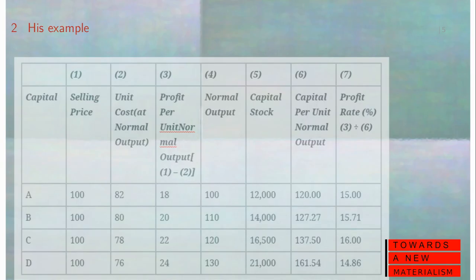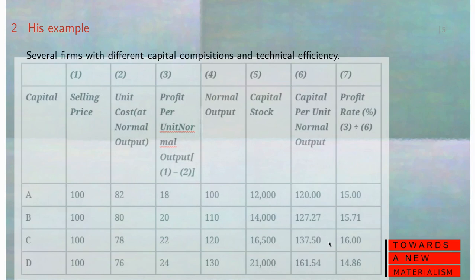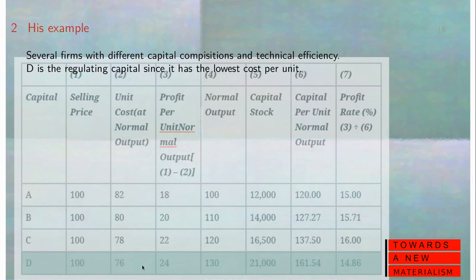What's a regulating capital? He gives an example of four firms — A, B, C and D — in one industry. These firms have different cost structures, different capital compositions and different efficiencies. For a selling price of a hundred in each case, one firm has 12,000 invested, another has 21,000 invested, and the unit cost varies. Industry D is what he calls the regulating capital, since it has the lowest cost per unit.